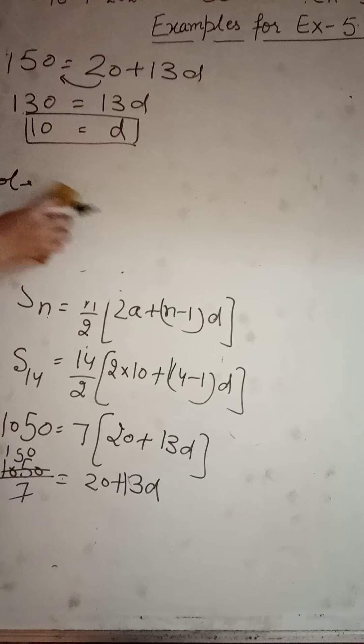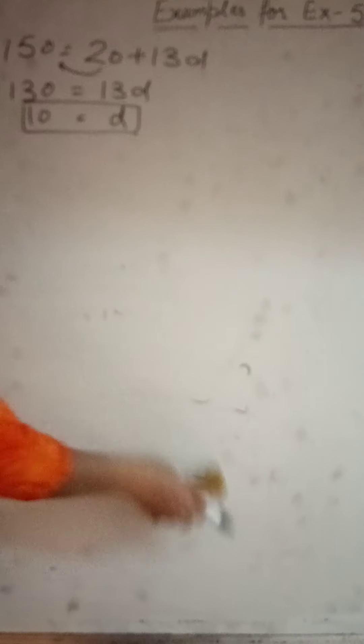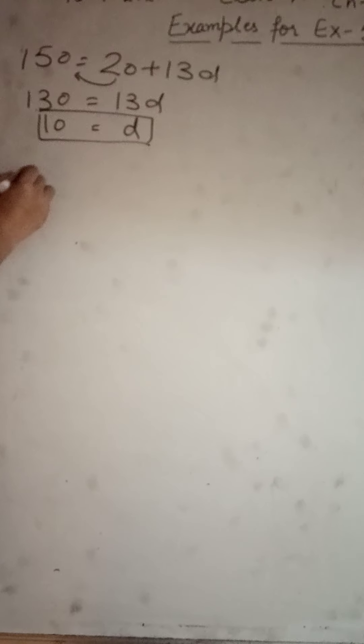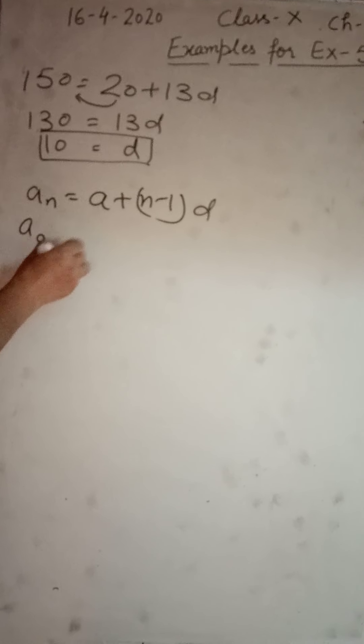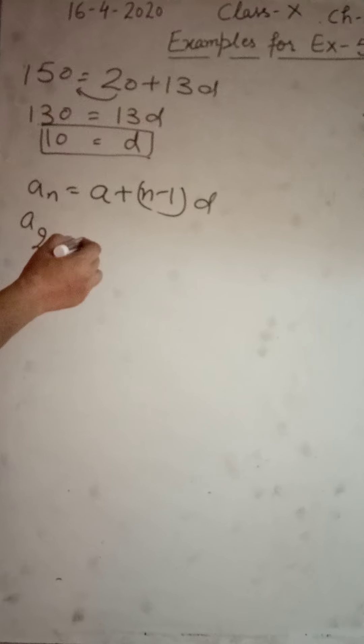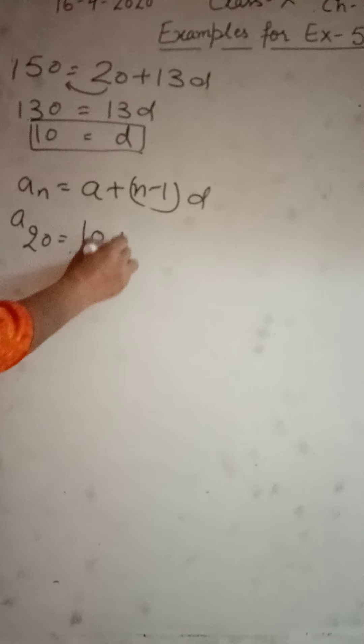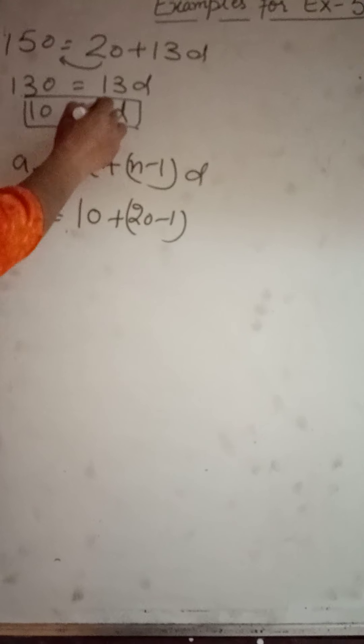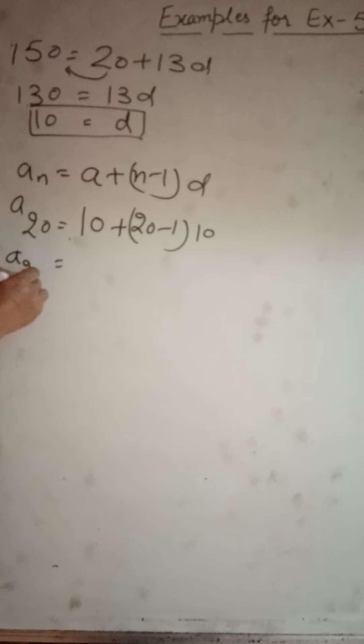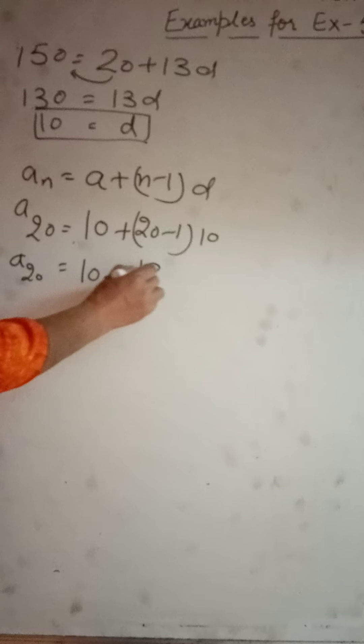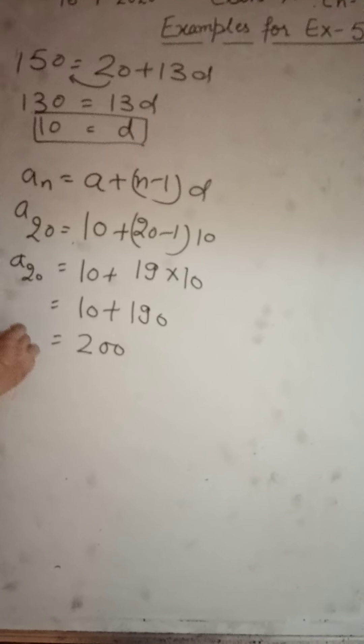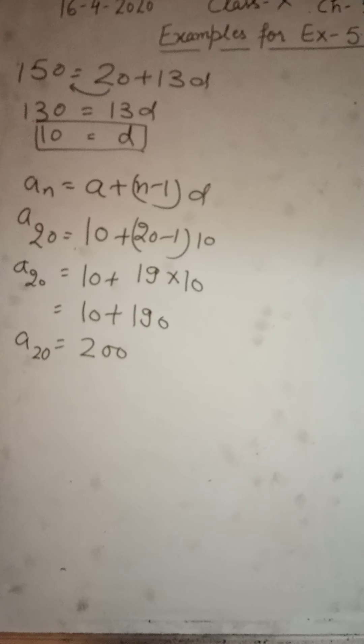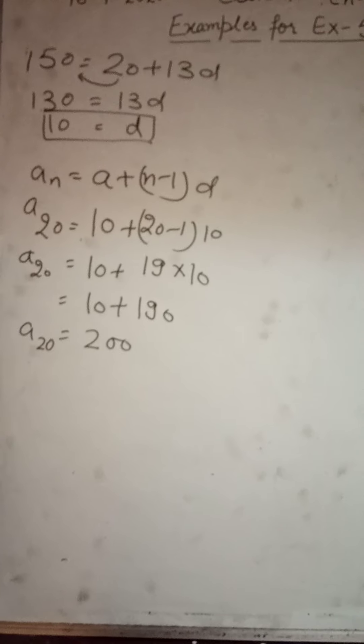Now for calculating a_20, write down the formula a_n. We have to find a_20, means n would be 20. a was given to us as 10. n is 20, and d we have calculated is 10. 10 plus 19 into 10. So we got our 20th term as 200 and 20 extra, 220.